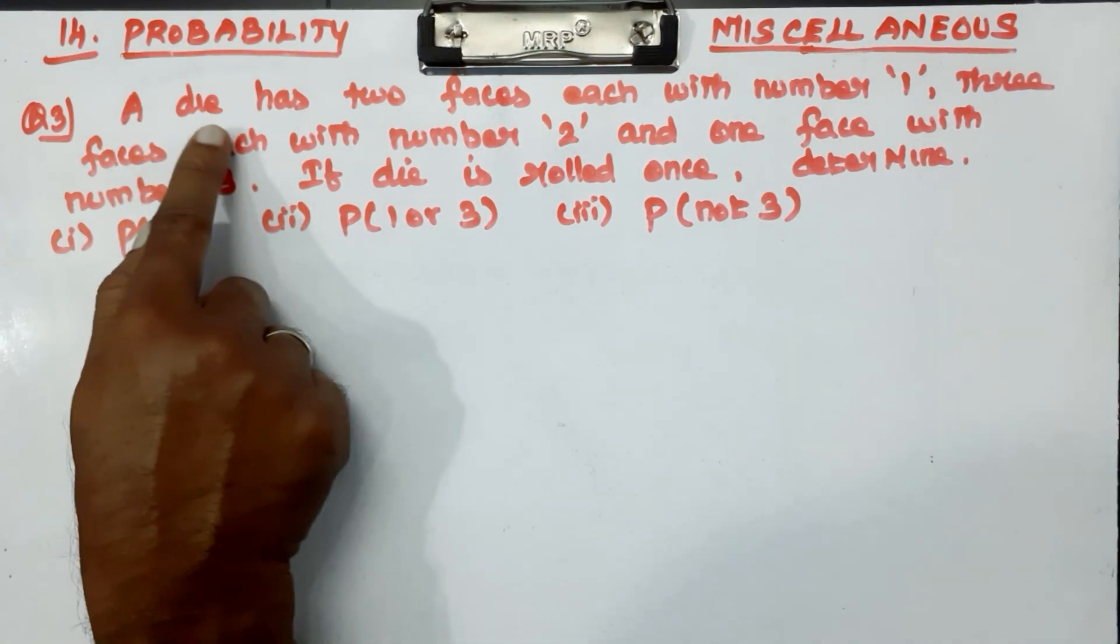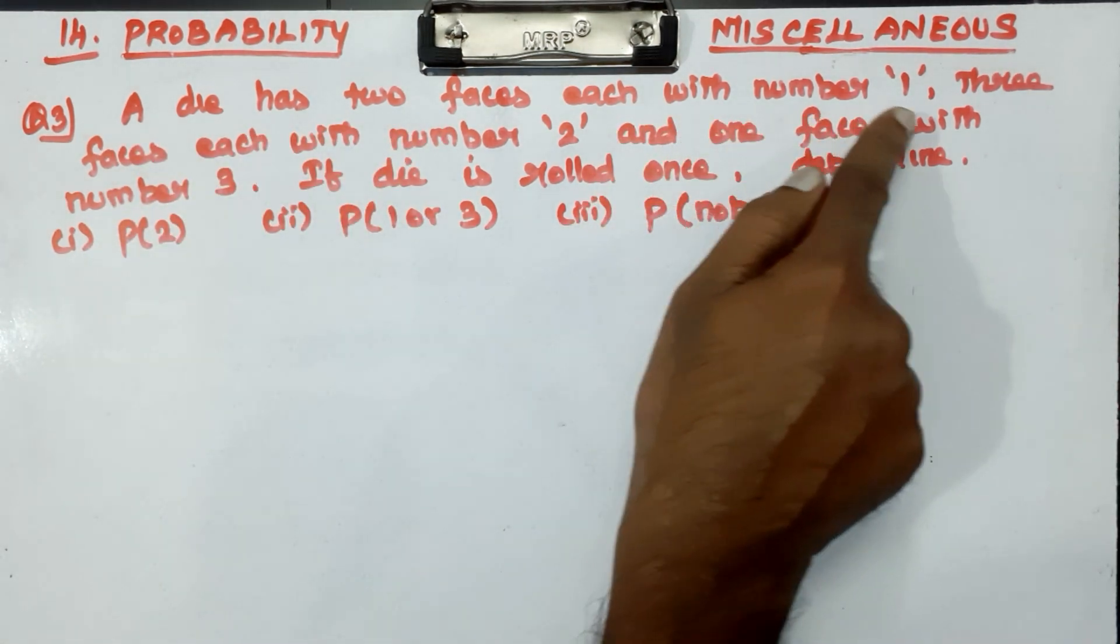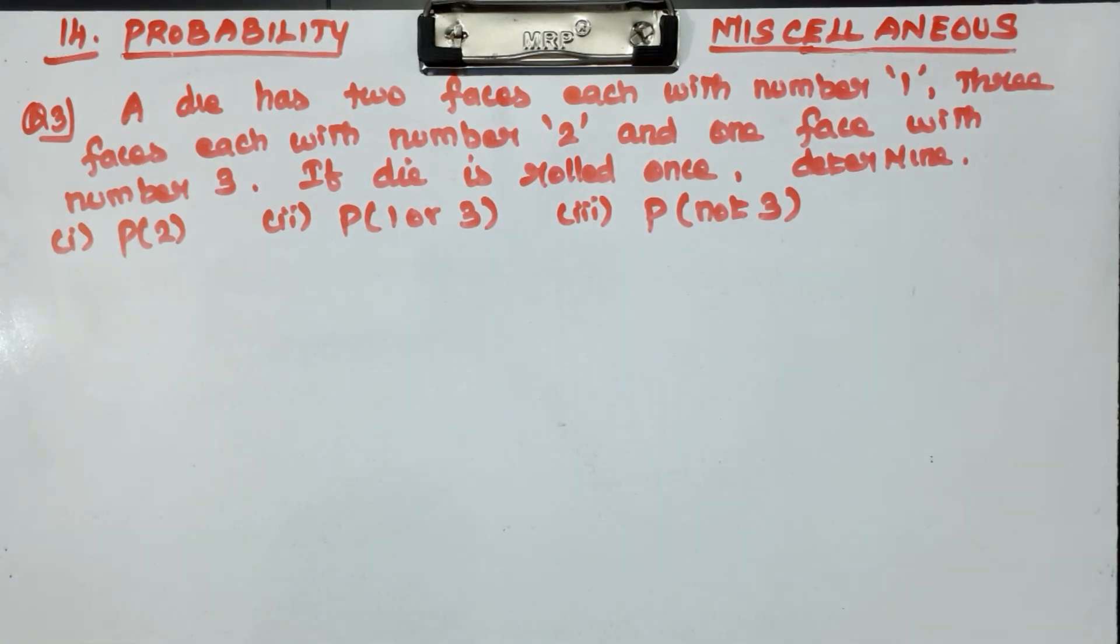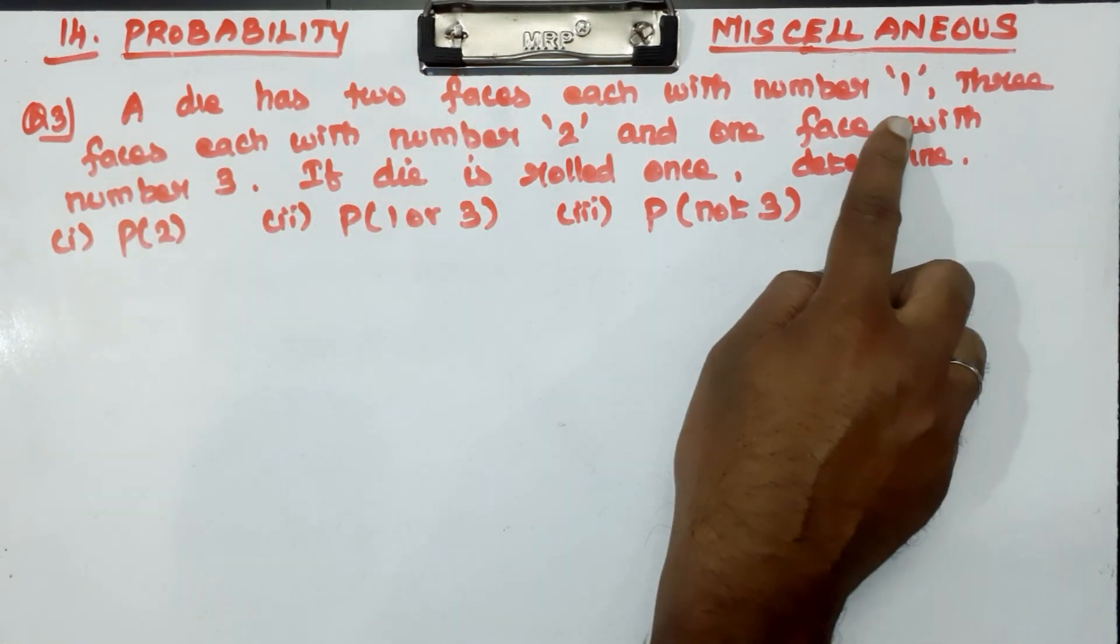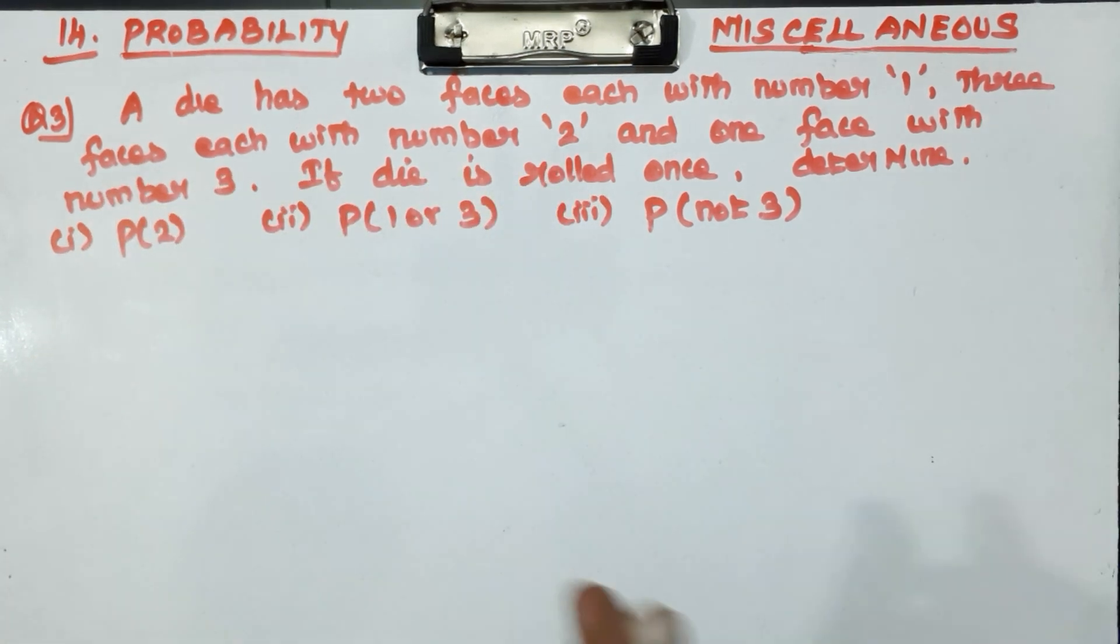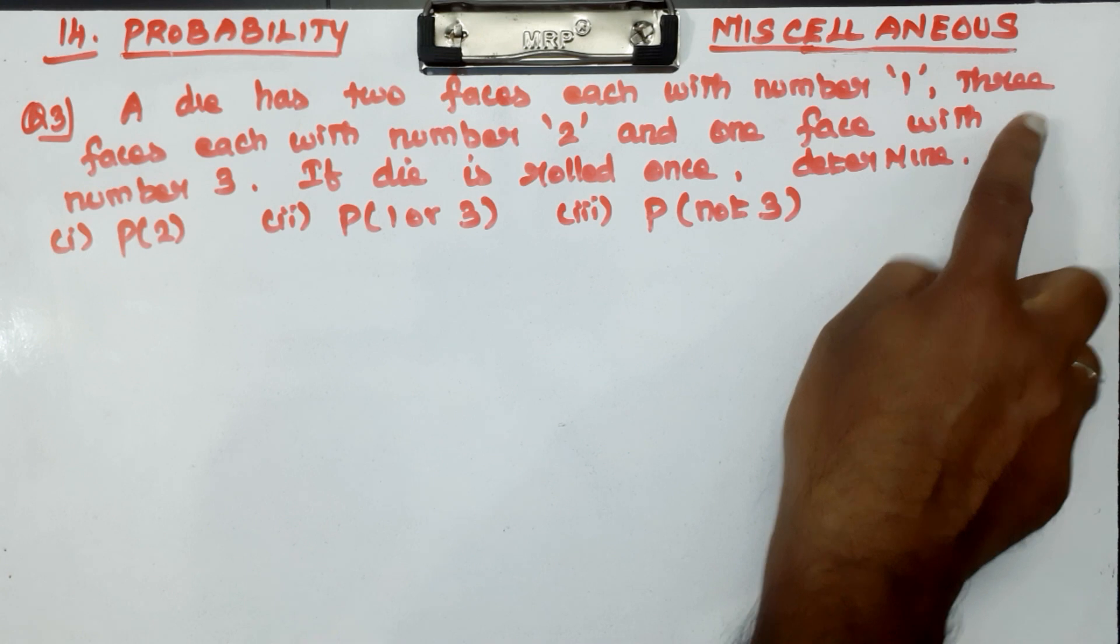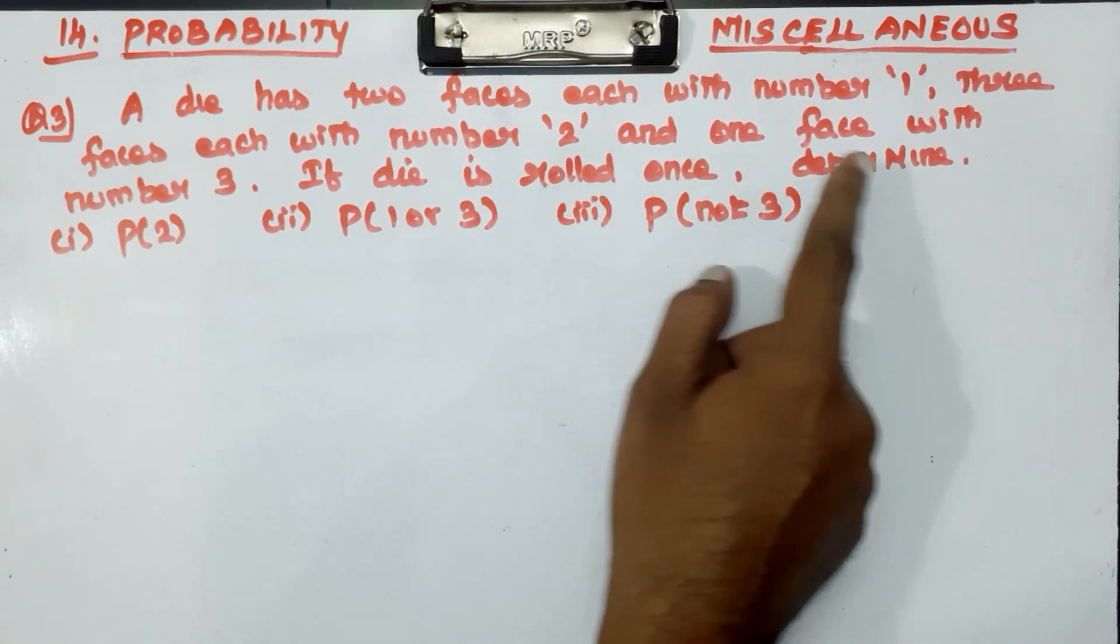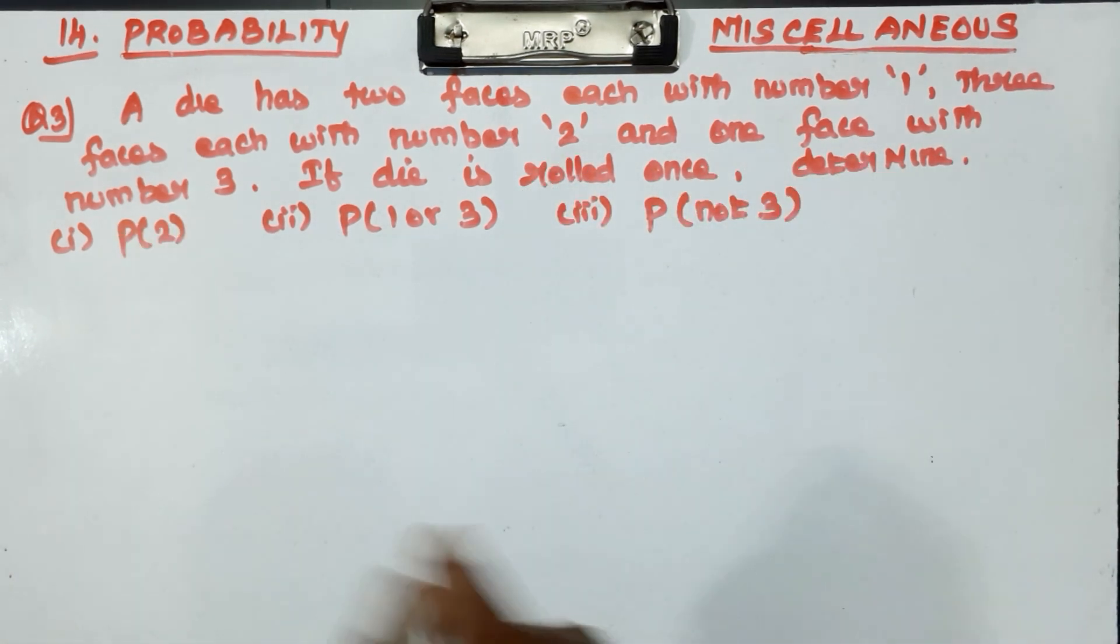A die has 2 faces each with number 1. If you know die has how many faces? Total 6 faces. This die has 2 faces with number 1, 3 faces each with number 2, and 1 face with number 3.